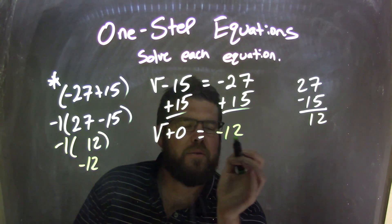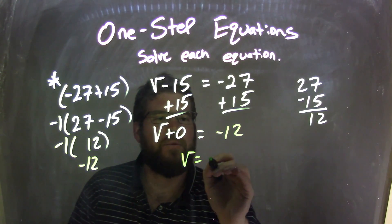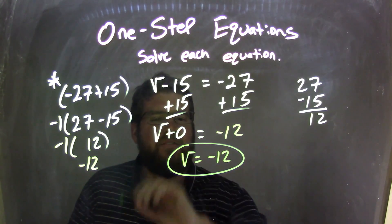Well, v plus 0 equals negative 12, don't need the 0, so now I'm left with v equals negative 12. Well, that's my final answer.